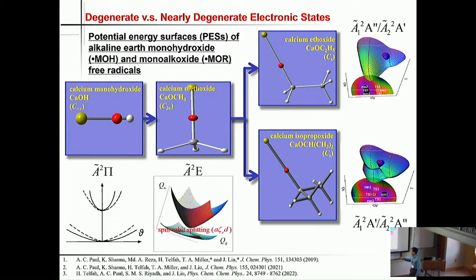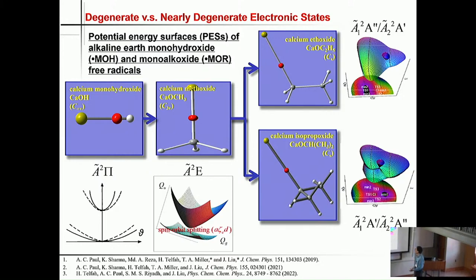If you replace the hydrogen atom with a methyl group, you get calcium methoxide, which is a symmetric top belonging to the C3V point group. You can go one step further and do either single or double methyl substitution, giving calcium ethoxide and calcium isopropoxide. These two are asymmetric top molecules, but they still have a reflection plane — they belong to the CS point group. If you break that symmetry further, you get C1 molecules which do not have any symmetry operations.